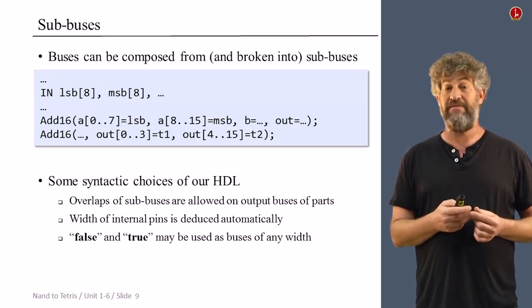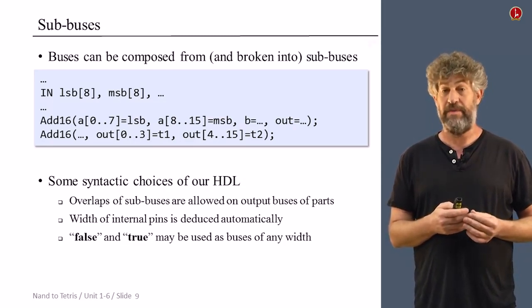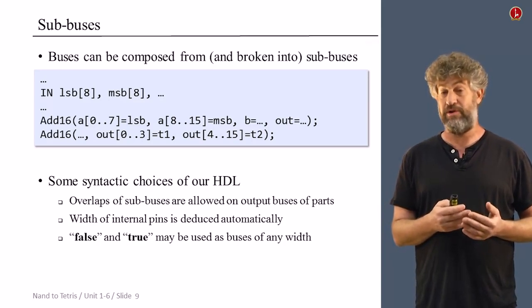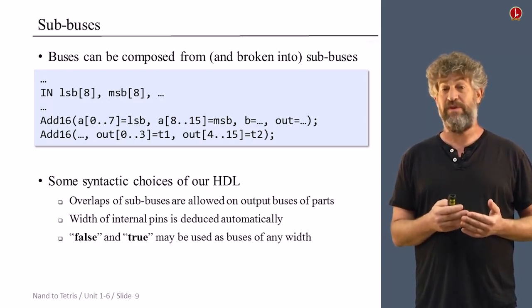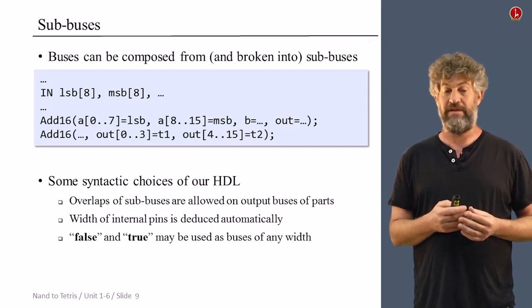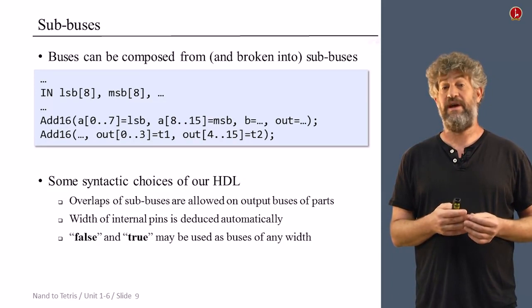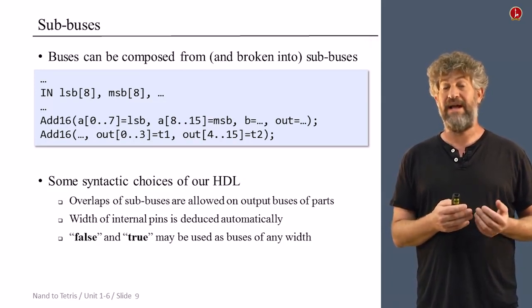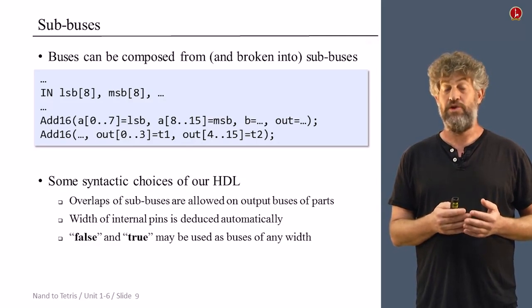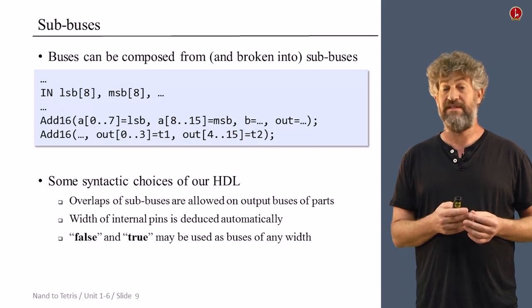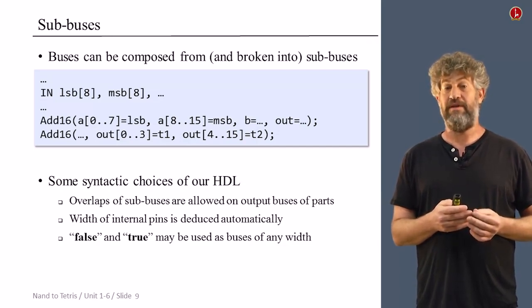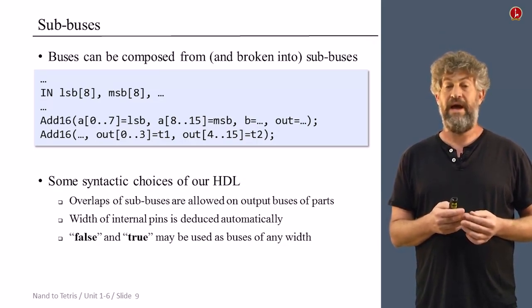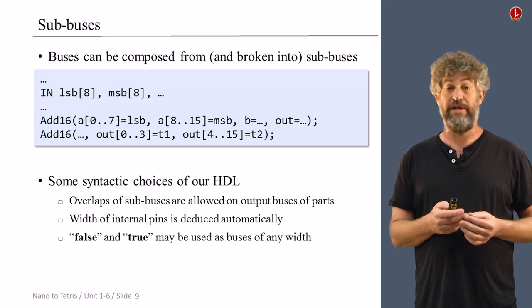Another convention that we have is internal buses are, their width is completely deduced by what you plugged into them. So you don't need to specify the width of an internal bus, internal pin. If it was connected to a bus, it just gets the correct width that it was connected to. And the third syntactic convention that I would like to mention is the fact that if you want to plug lots of zeros or lots of ones into a bus, you can do it together in one command by using true or false as constants. And in both of these cases, it's multiplied. So if you plug true into some bus, each one of the bits gets a value of one. And similarly for false, where each one of the bits gets zero.